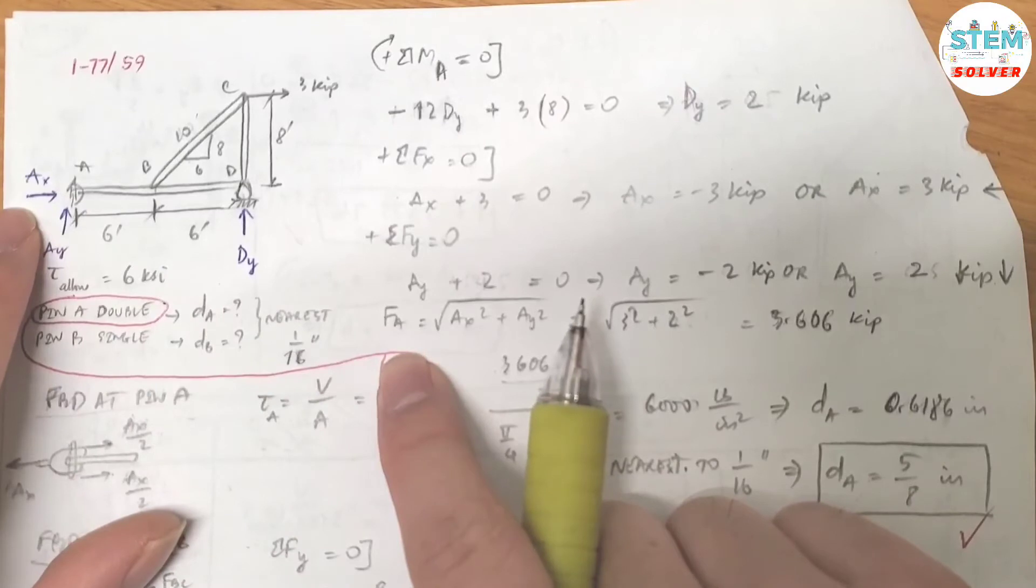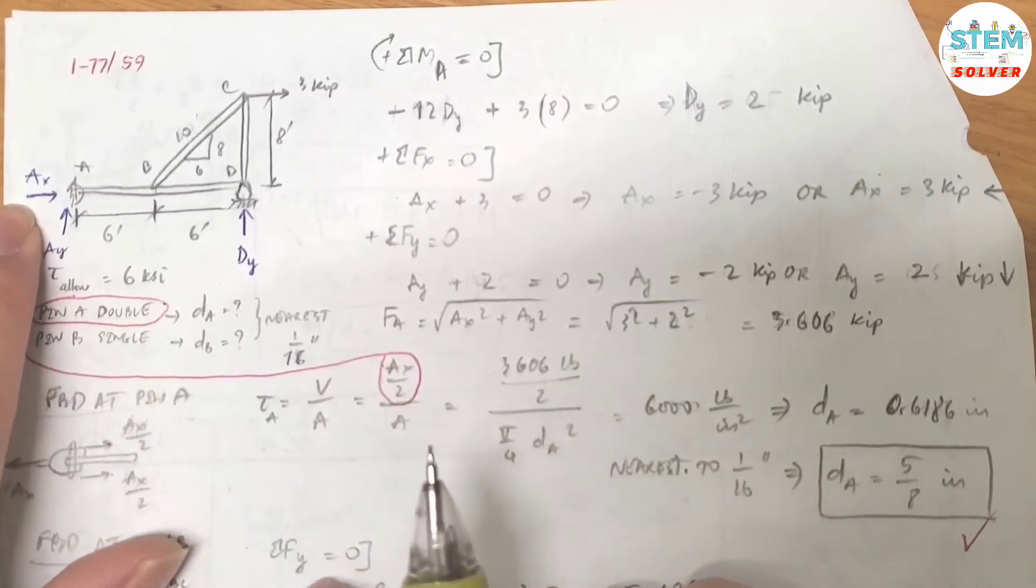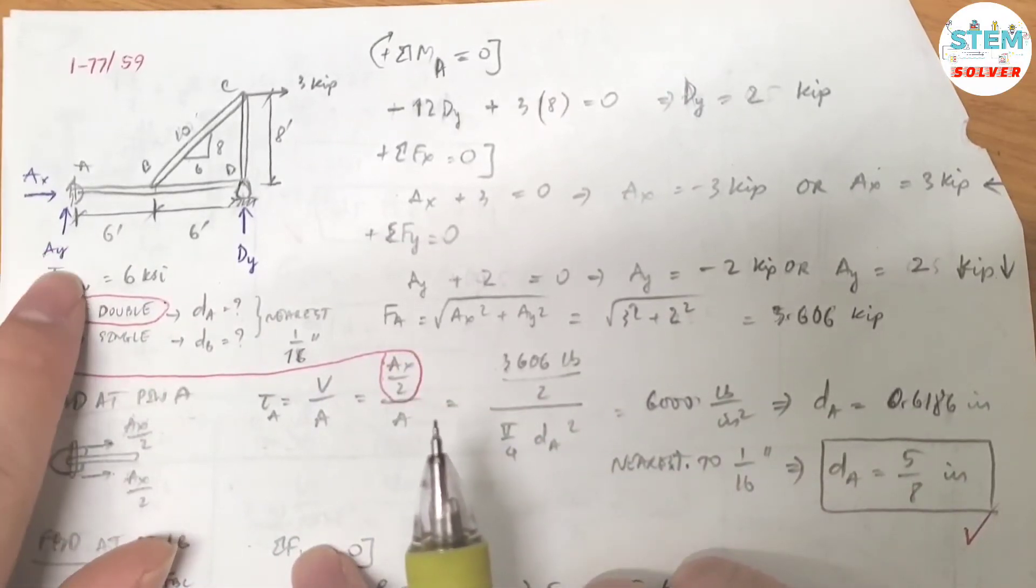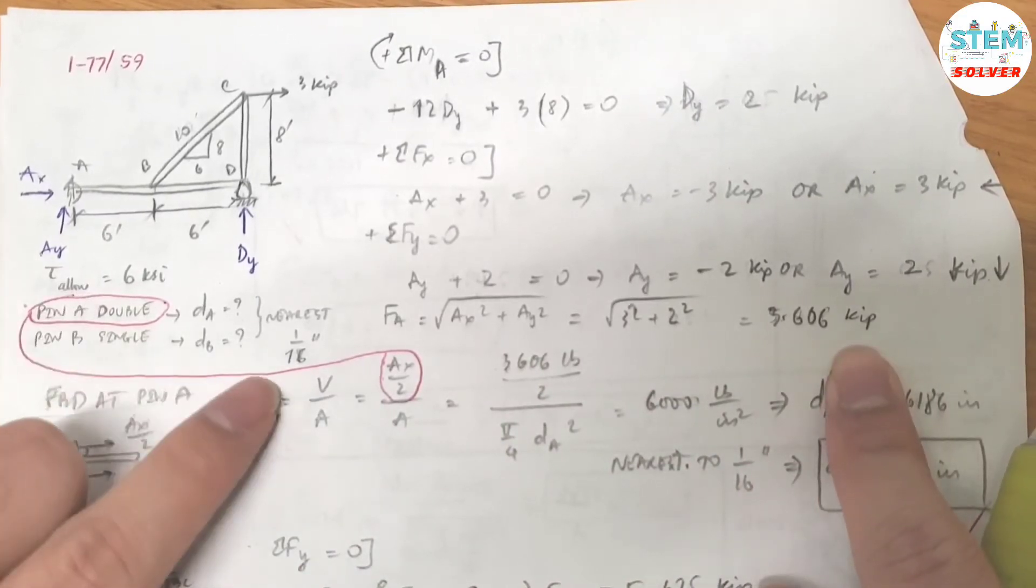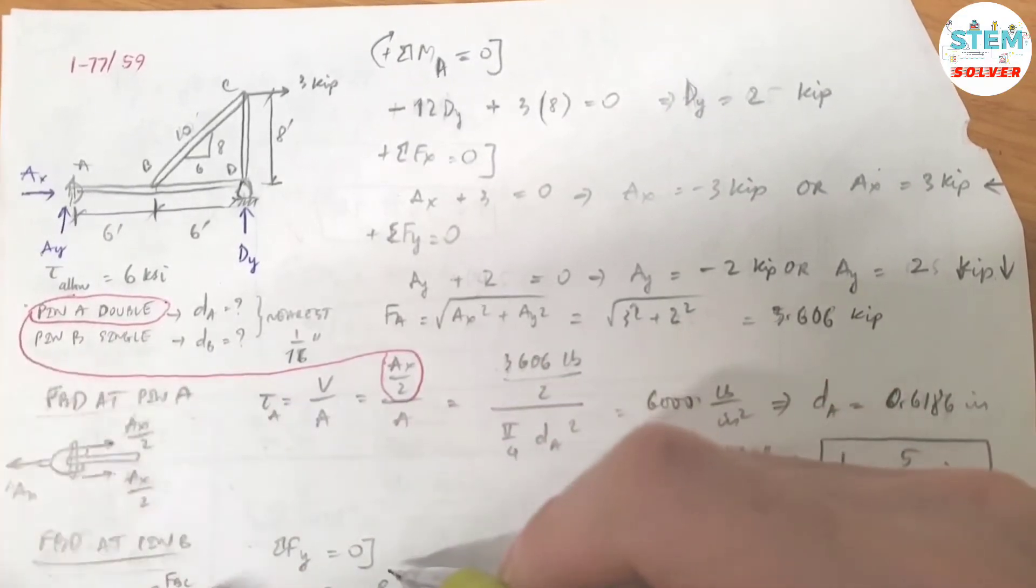Now the resultant force at A is equal to the square root of Ax squared plus Ay squared, which I got 3.606 kips.